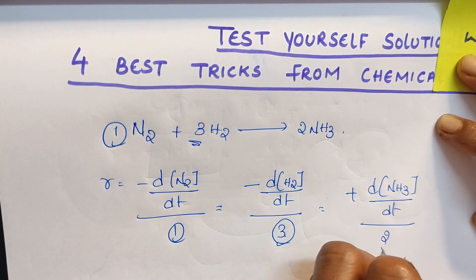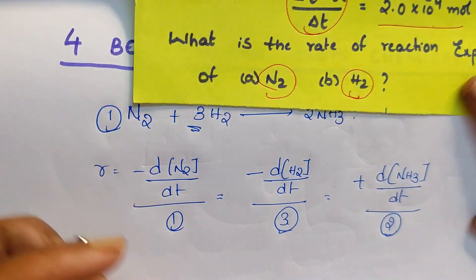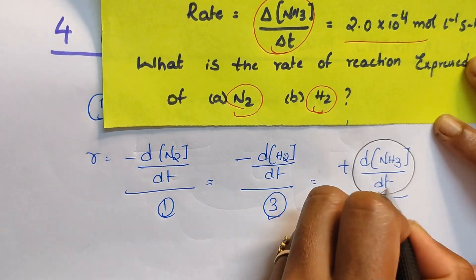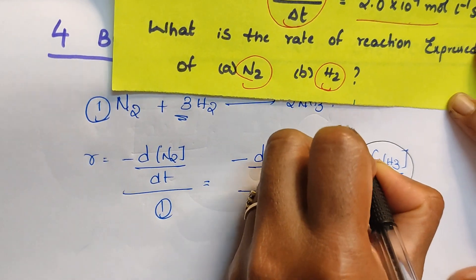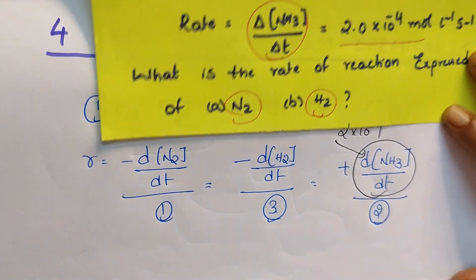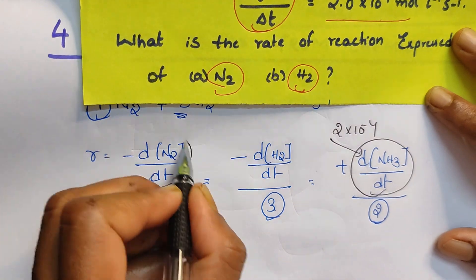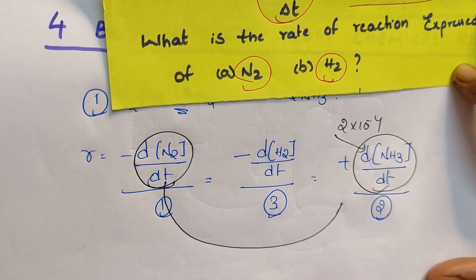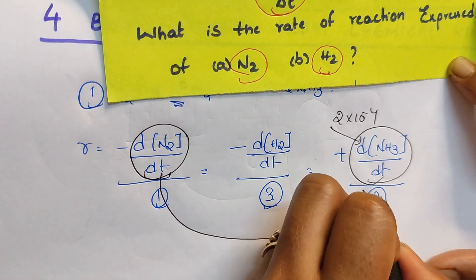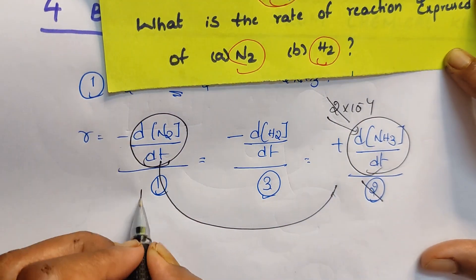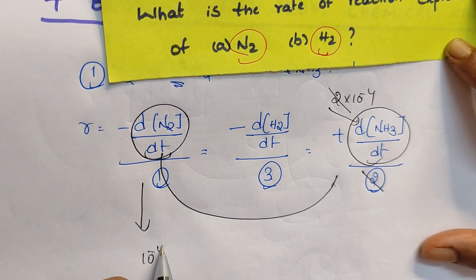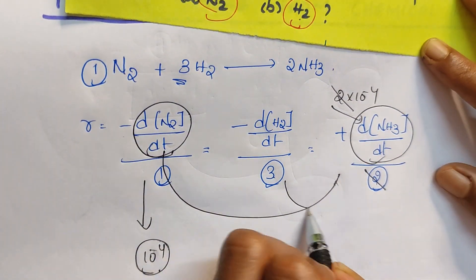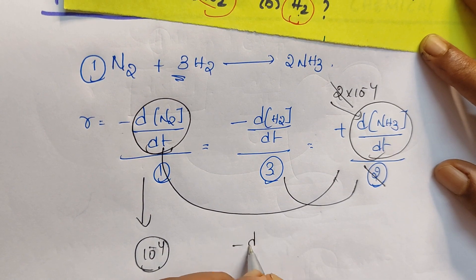Divided by stoichiometric coefficient is 2. Just check it out whether your answer is correct or not. Here ammonia value is given in the question, 2 into 10 power of minus 4, right? And they're asking nitrogen. So nitrogen means just these two expressions you have to take it out. 2 and 2 will be cancelled, then its value is 10 power of minus 4.